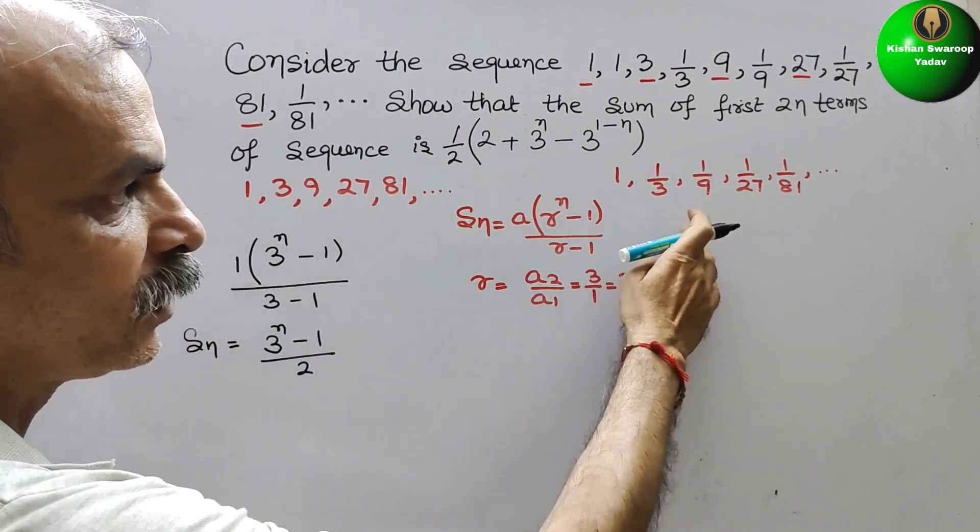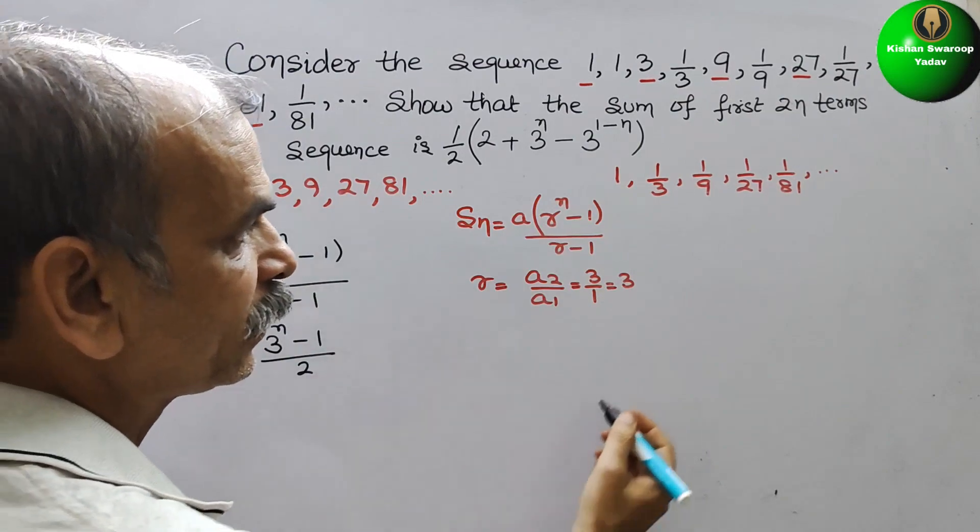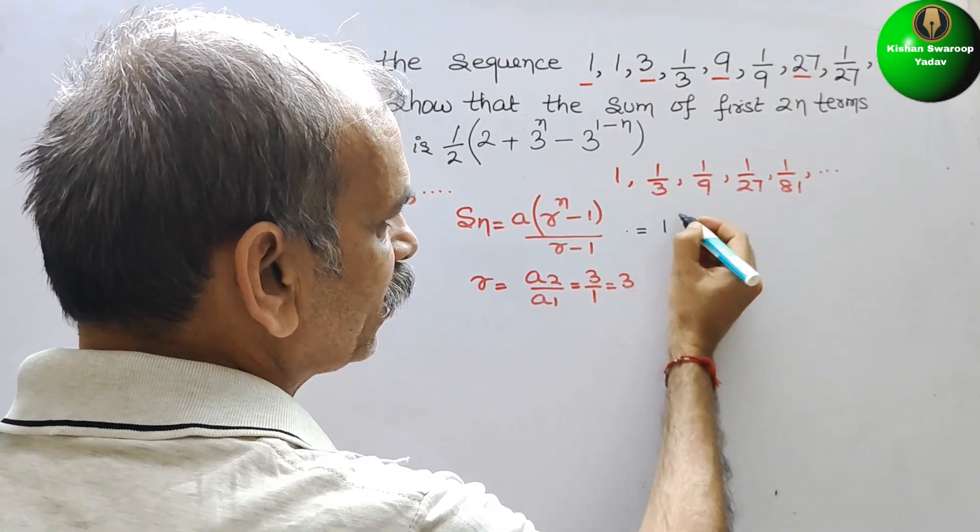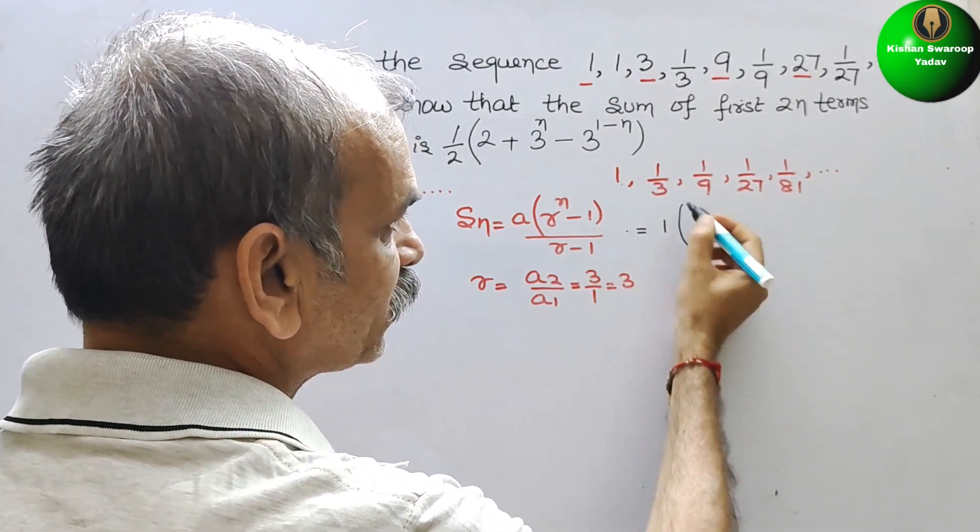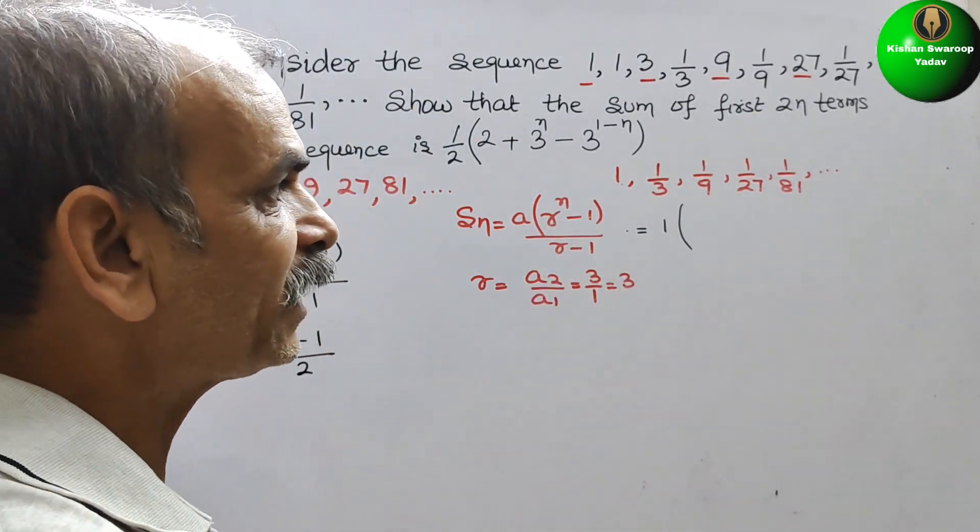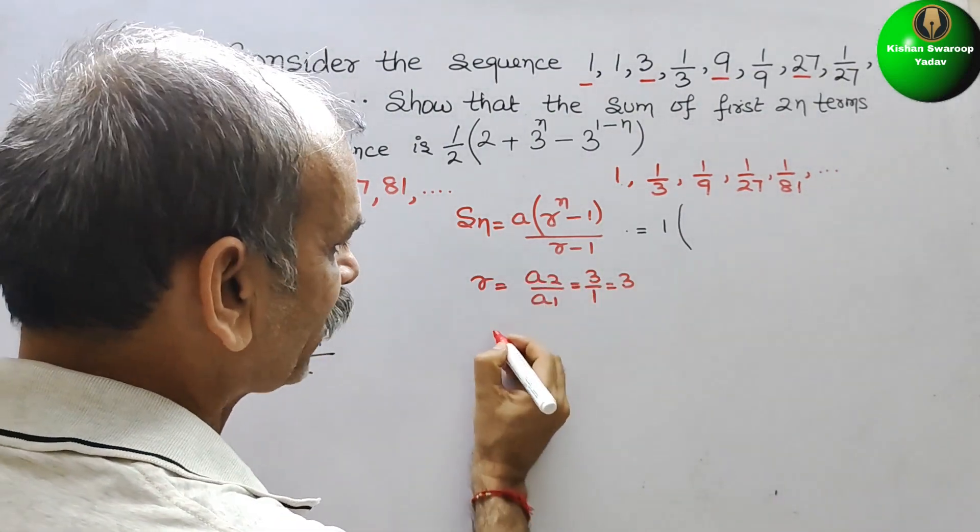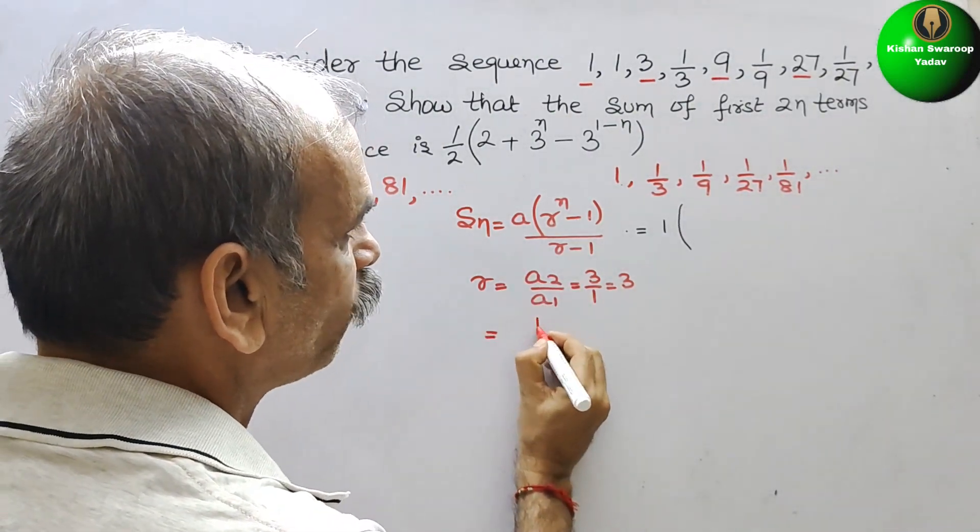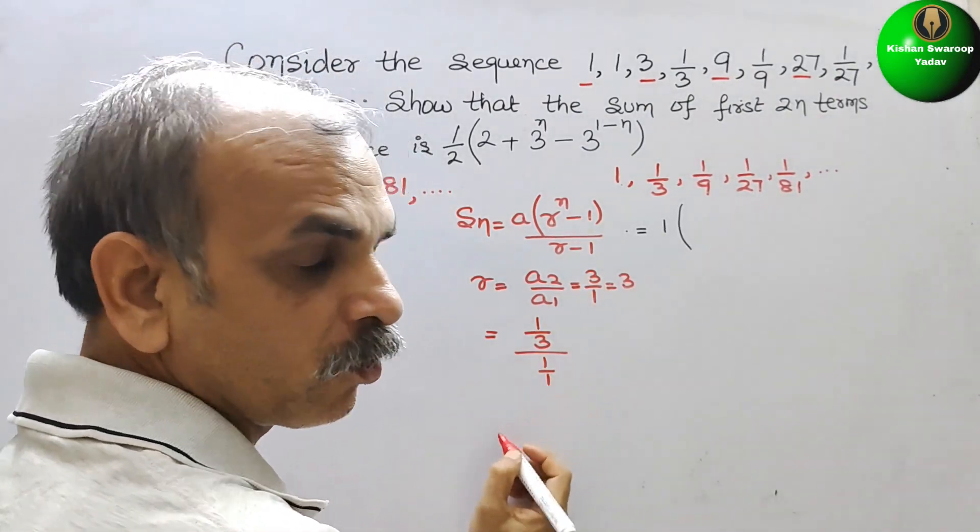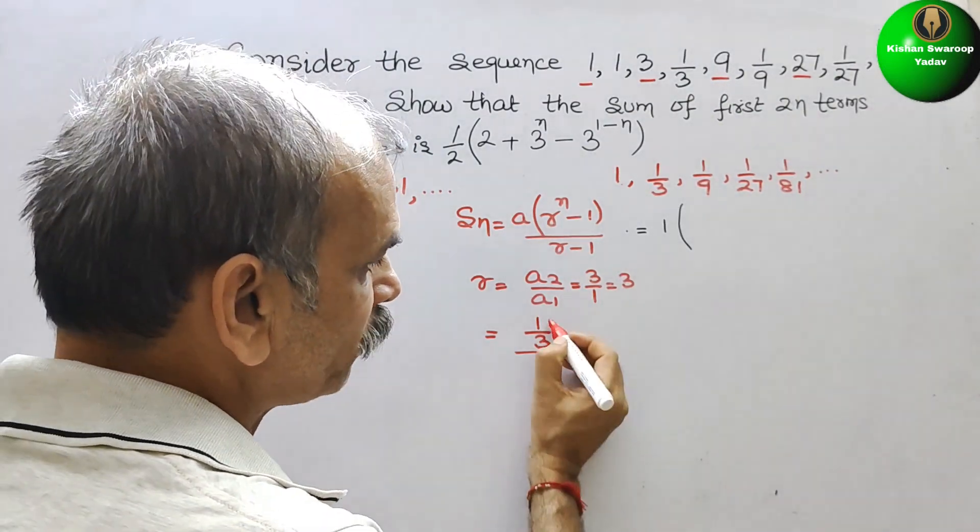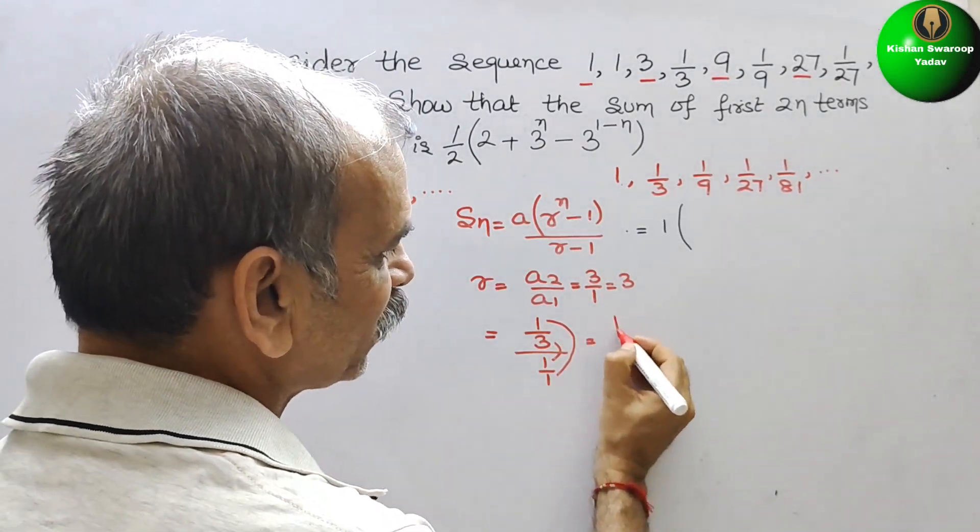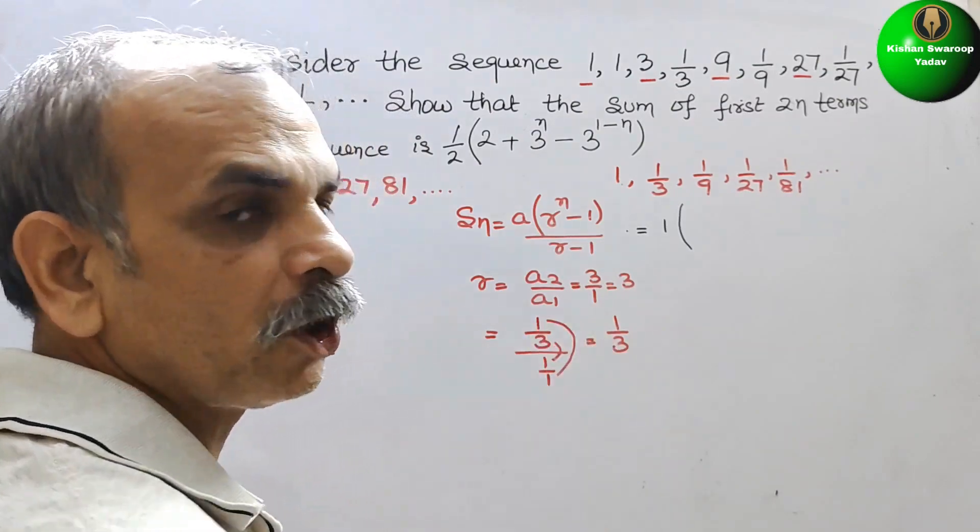Next S_n, we will go for this. Here, we have to substitute. So it will be 1, A is 1 and we will find R. What is R in this sequence? So we can say R is a_2 by a_1. That means it will be (1/3) by 1.